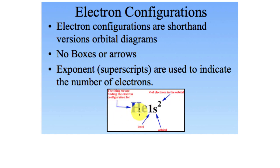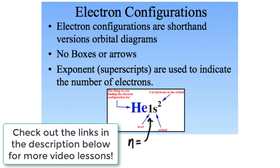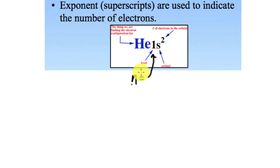Let's talk about the notation. For helium, this is the electron configuration. The number represents the energy level, so that would be n equals 1. This is your sublevel orbital designation — so this is the 1s — and there are two electrons in that orbital. So we use exponents as opposed to boxes.